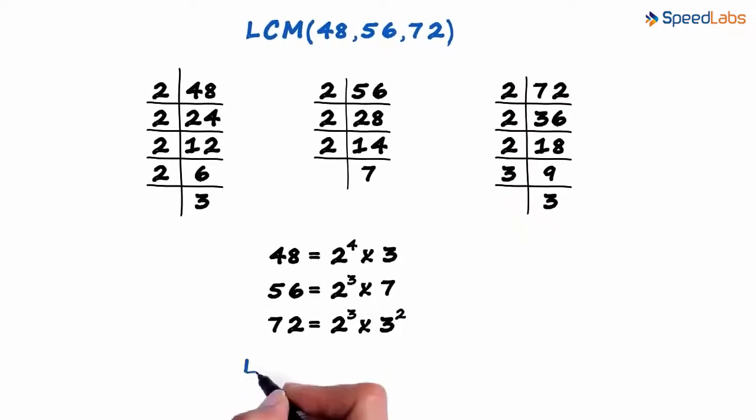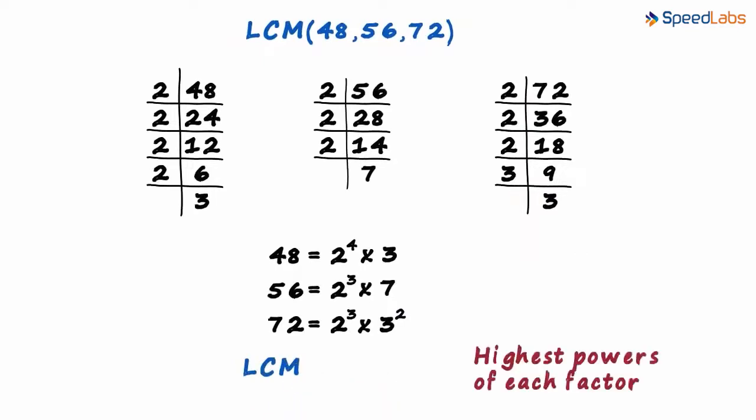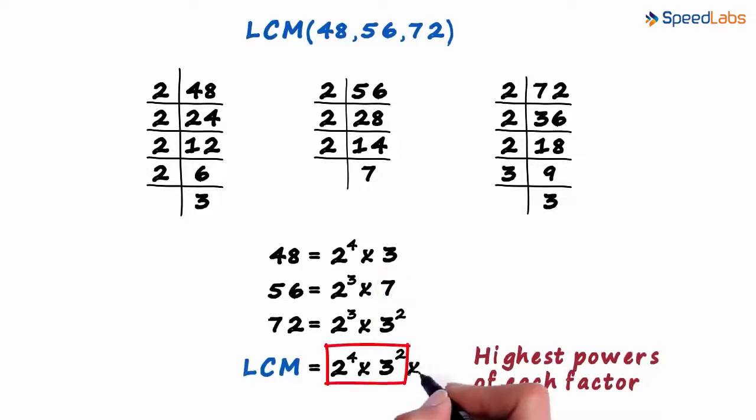How do we find the LCM? We look for the highest powers of each factor and then multiply them. Among all the powers of 2, 2 raised to 4 is the highest. We write 2 raised to 4 here. Among all the powers of 3, 3 squared is the highest and 7 raised to 1 is the only other factor left. So we multiply this with 7.